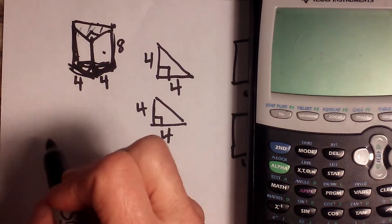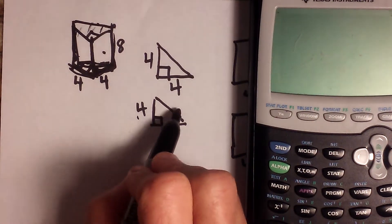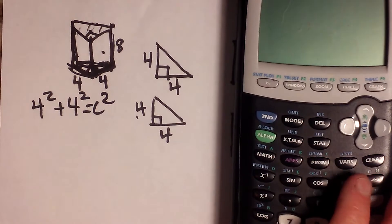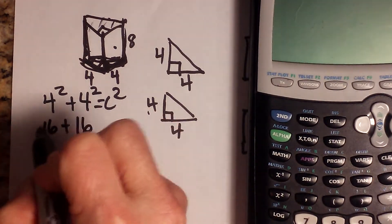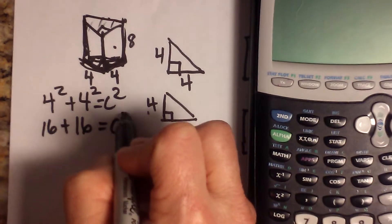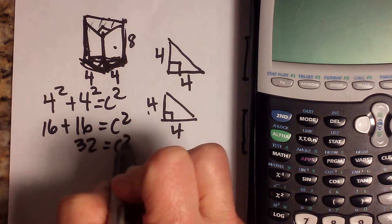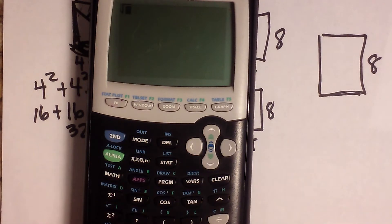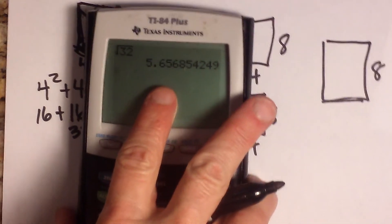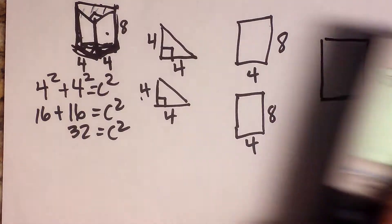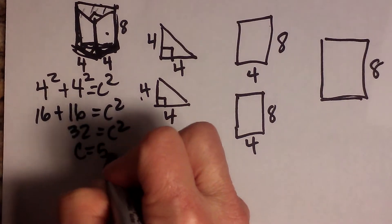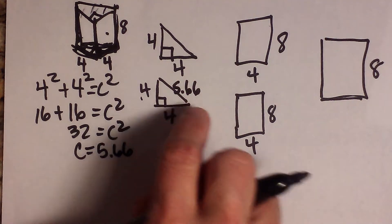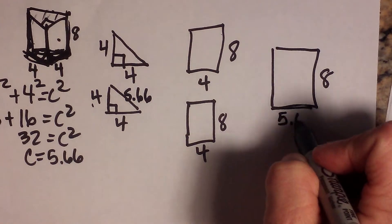We're going to use the Pythagorean theorem: a² + b² = c². So 4² + 4² = c², giving us 16 + 16 = 32. We need the square root of 32. Grabbing a calculator, the square root of 32 is approximately 5.66, rounded to two decimal places. That's the length of the hypotenuse, so we label that fifth face as 5.66 wide.